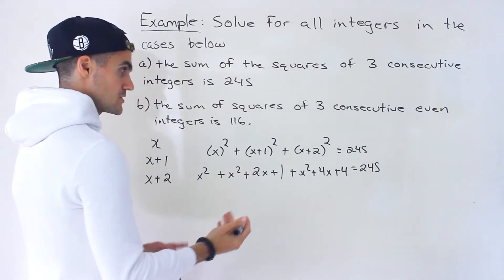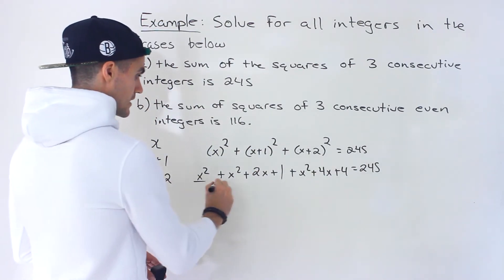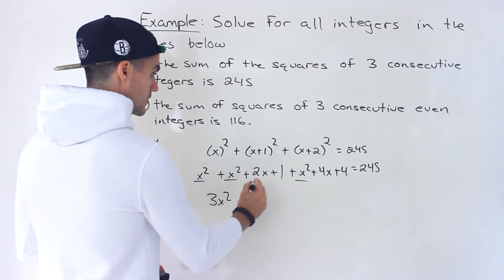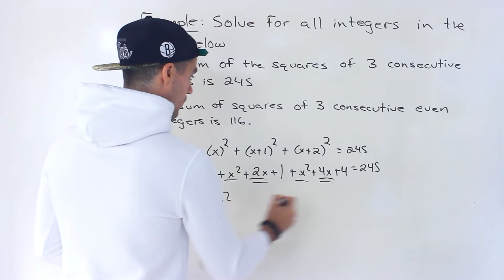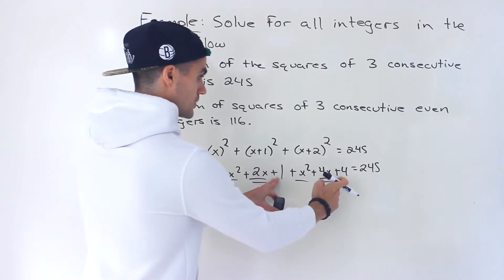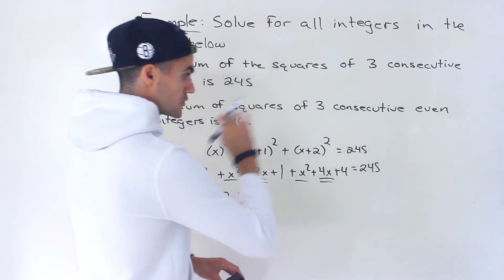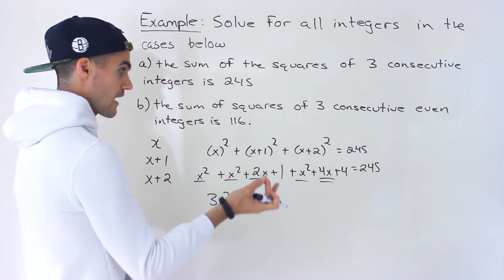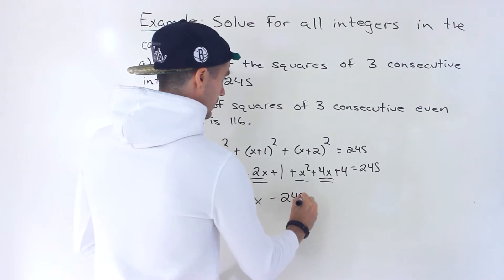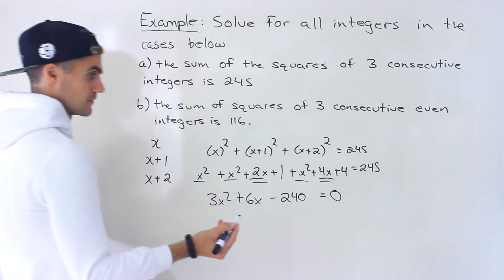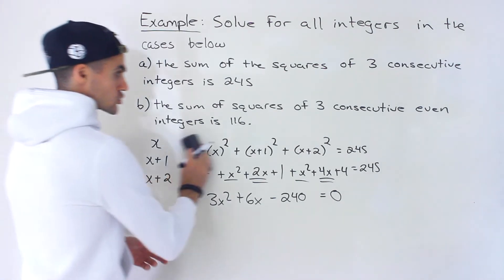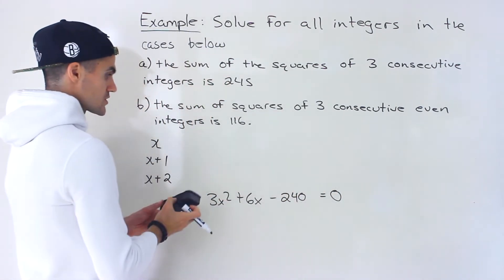I'm going to bring everything over to the left side and simplify like terms. We get 3x squared, then 2x plus 4x gives 6x, and 1 plus 4 is 5. When we bring the 245 over, 5 minus 245 gives us negative 240. So we have 3x squared plus 6x minus 240 equals zero — a quadratic equation to solve.